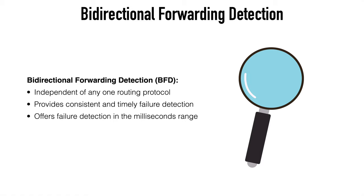In addition, BFD is much faster than any of the built-in failure detection timers in our routing protocols. Looking at a best-case scenario with protocol timers, we're probably going to see failure detection times around one second at best, and in a real-world environment it's probably going to be a bit longer. That may not seem like a lot of time, but it's very disruptive — especially when talking about video or voice packets being dropped. BFD can get us down to the 150 milliseconds range, which is obviously much faster.